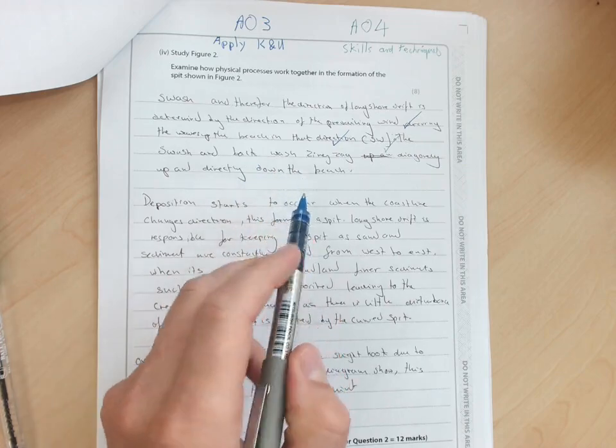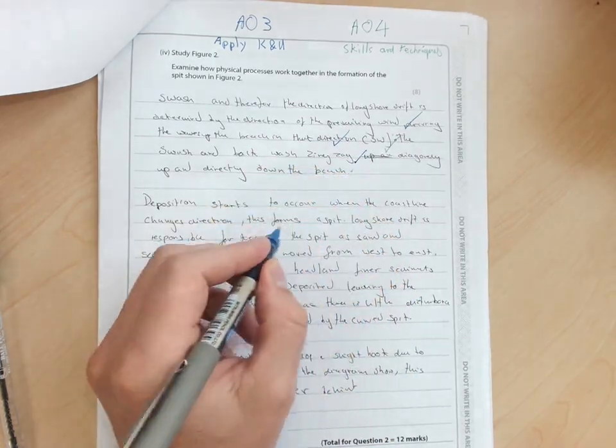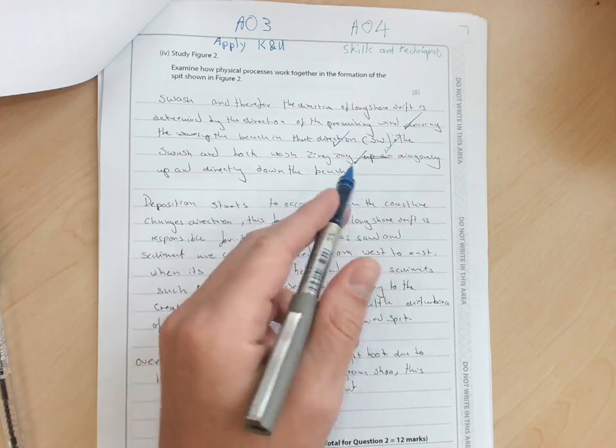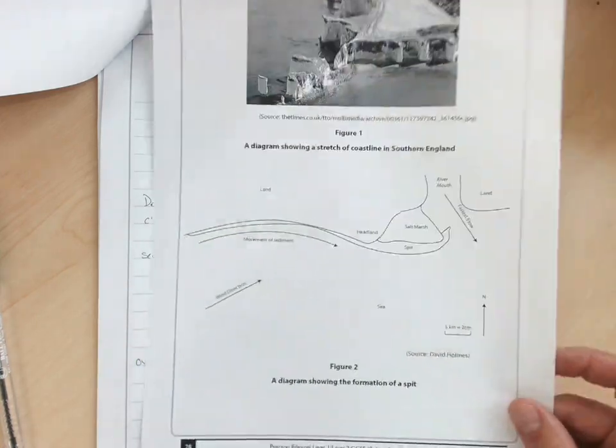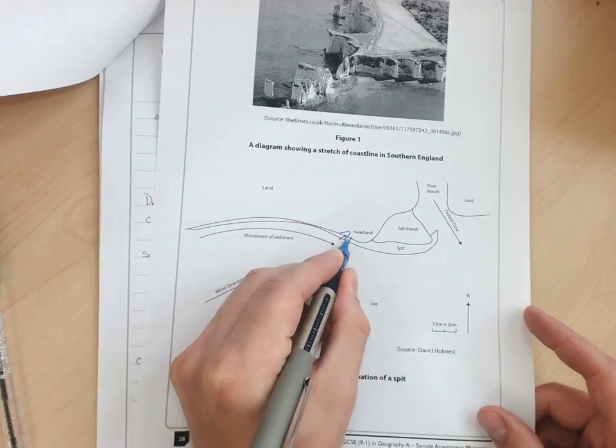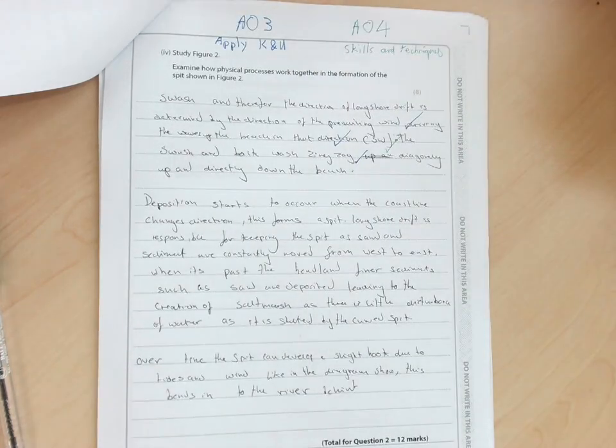The swash and backwash zigzag is an important term, diagonally up and directly down the beach. So it's diagonally up at an angle, following the wind direction, but then straight down. For yourself, there's no point annotating the diagram. You wouldn't hand that in.